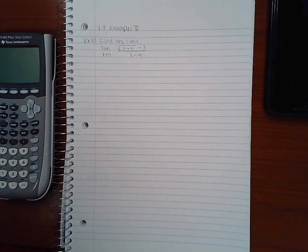Okay, in this video we will continue with section 1.3, examples part 2. We're continuing here with example number 3. This one states find the limit as x approaches 4 of the function: the square root of x plus 5 minus 3, all over x minus 4.